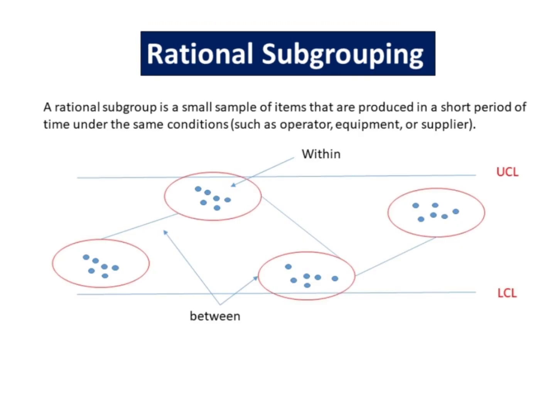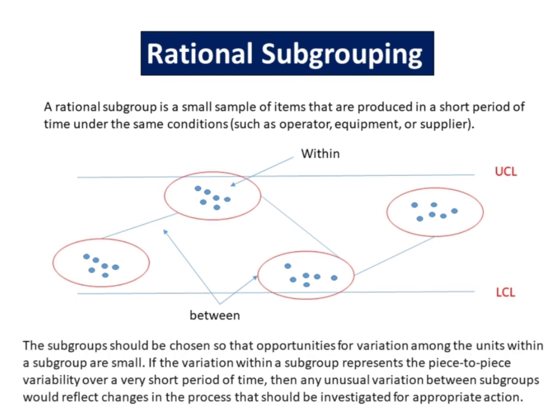A rational subgroup is a small sample of items that are produced in a short period of time under the same conditions, such as operator, equipment, or supplier. The subgroups should be chosen so that opportunities for variation among the units within a subgroup are small. If the variation within a subgroup represents the piece-to-piece variability over a very short period of time, then any unusual variation between subgroups would reflect changes in the process that should be investigated for appropriate action.